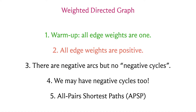Welcome back. Let's continue from where we left off in the last segment, where we were talking about the single source shortest path problem. We said that if you're dealing with an unweighted graph — when all the edge weights can be thought of as one — then an algorithm you've already seen, breadth first search, actually gives you the shortest path information you're looking for.